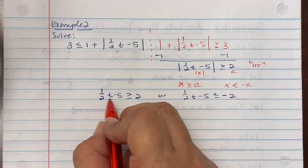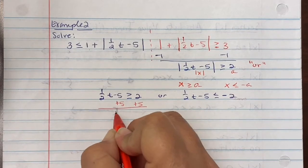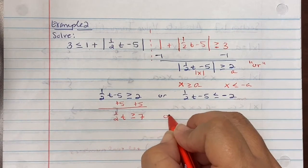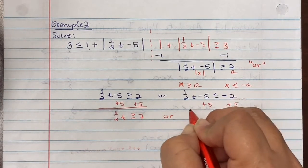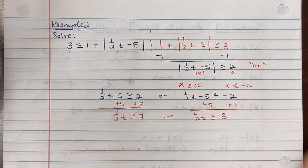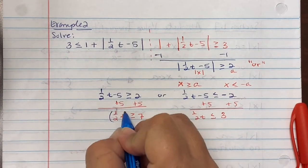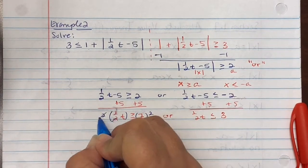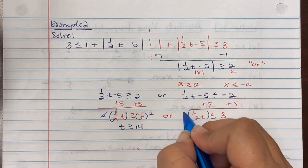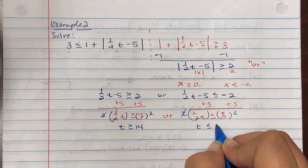For the first equation, add 5 to get one-half t greater than or equal to 7, then multiply by 2 to get t greater than or equal to 14. For the second equation, add 5 to get one-half t less than or equal to 3, then multiply by 2 to get t less than or equal to 6.